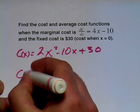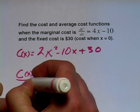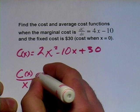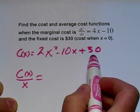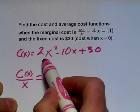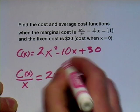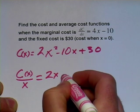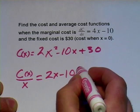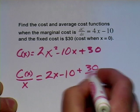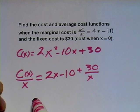The average cost is just the cost function per unit, or divided by x. So I'm just going to take each of these terms and divide by x. So 2x² over x is just going to be 2x, negative 10x over x is going to be negative 10, and 30 over x is 30 over x. And that is our average cost function.